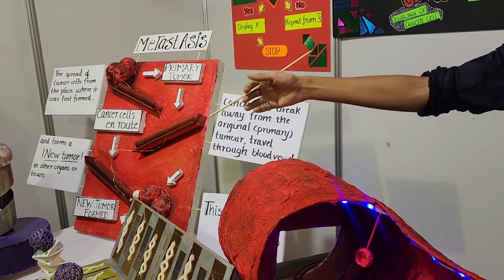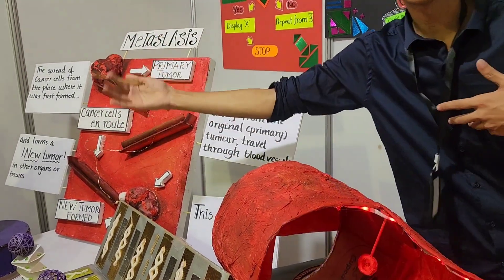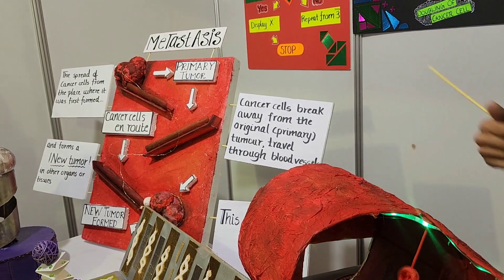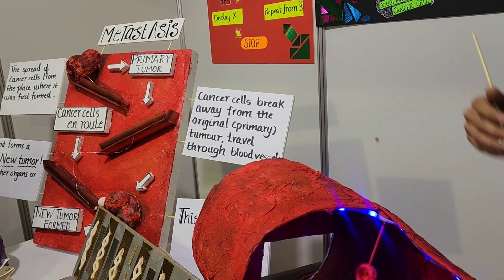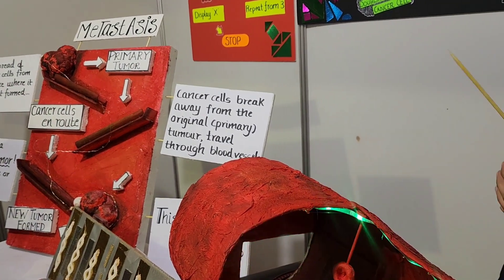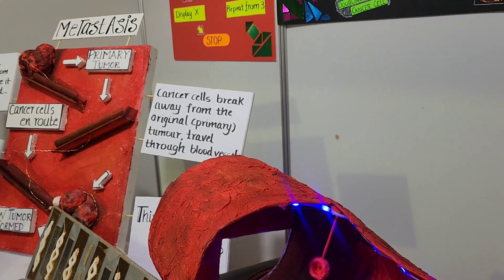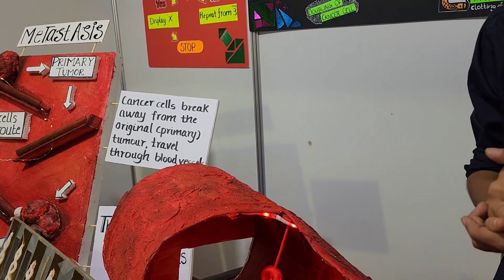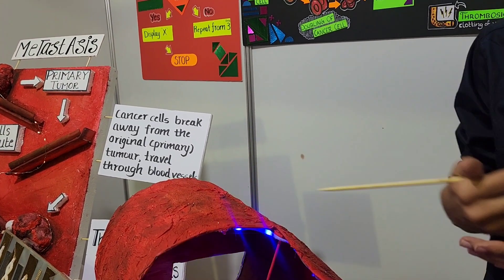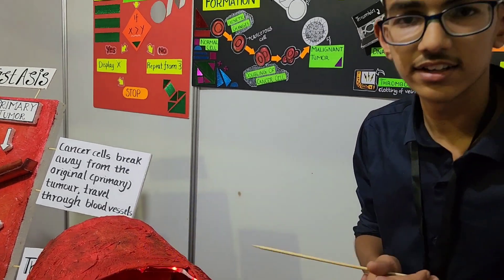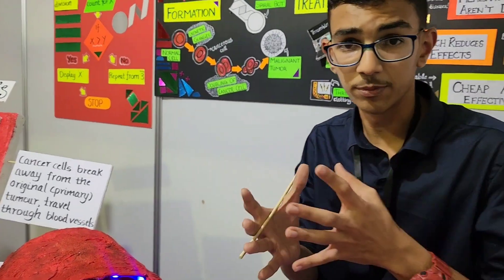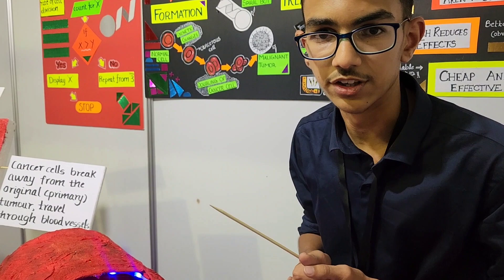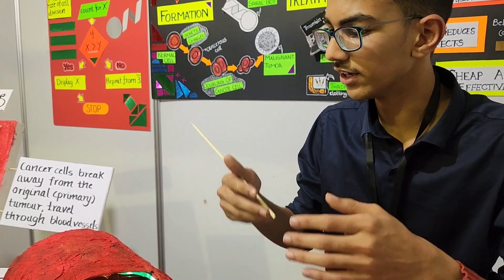Detection can be done using this — this is a hypothetical nanobot shown as a spiral block. The spiral block will detect any abnormality in cell division in that organ. If there is any abnormality, it will detect it and send that report to the physician, who will later treat the patient.